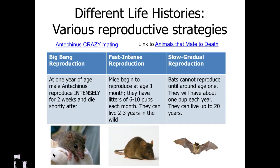That's big bang: mate, do nothing but mate, find every female you can, and then die. Watch the video and they explain why this is actually an effective strategy and why natural selection would in fact select for it.